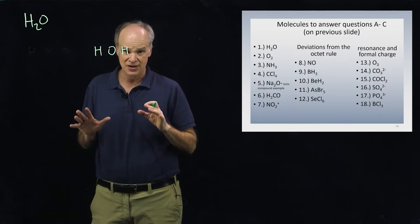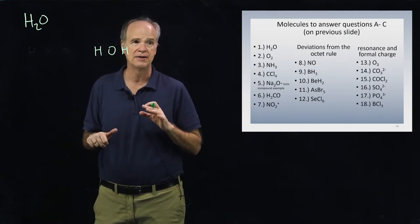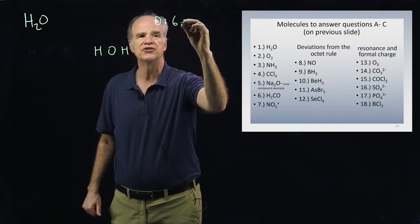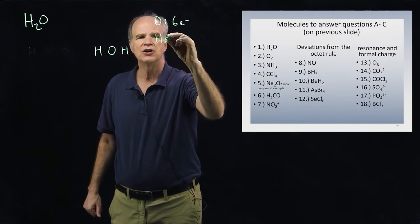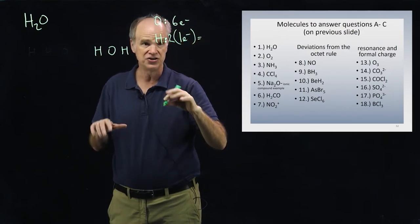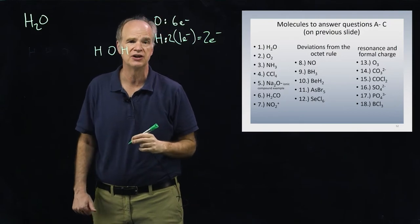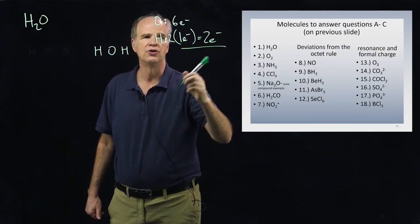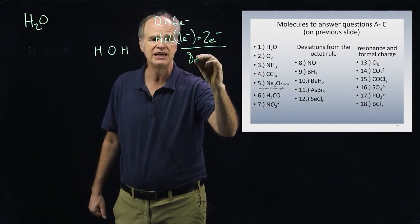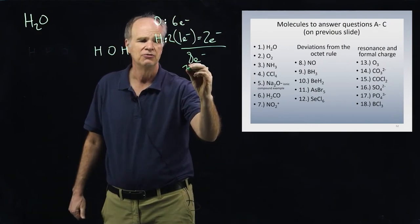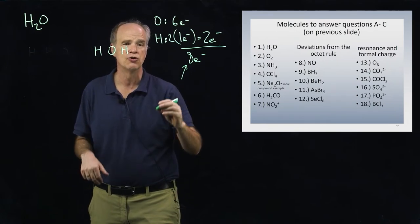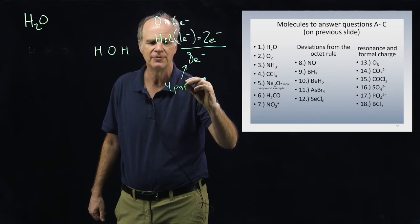Now let's count the total number of valence electrons. We have one oxygen with six valence electrons, and two hydrogens each with one valence electron, giving two electrons from the hydrogens. So we have eight valence electrons total, which we think of as four pairs of valence electrons.